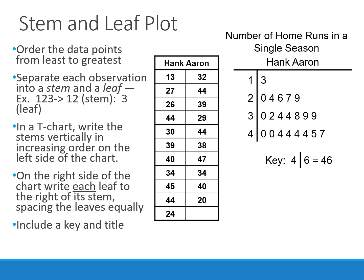Next is the stem and leaf plot, something you've probably seen in a previous math class. We take each data point and split it into a stem and a leaf. For Hank Aaron's data, the number 13 splits into a stem of 1 and a leaf of 3. The center line separates the stems from the leaves, and values are placed in order. A stem and leaf plot shows the shape just like a histogram or dot plot. This distribution is skewed to the left because the tail is toward the lower end — if you tilt it on its side, the tail is on the left.